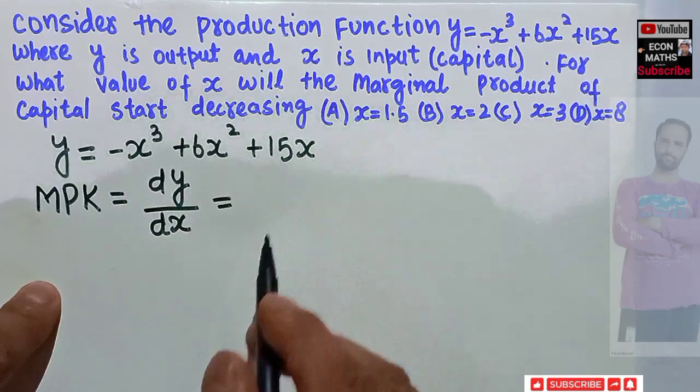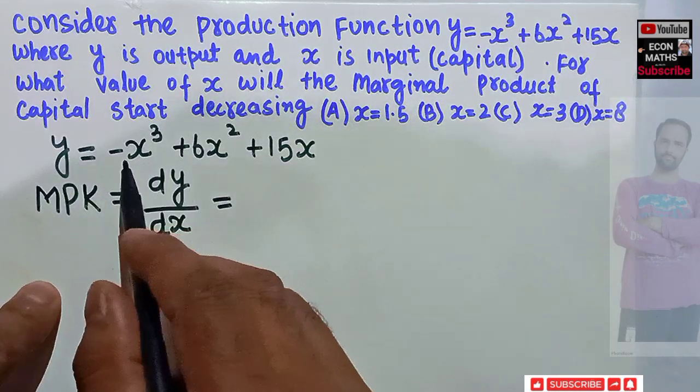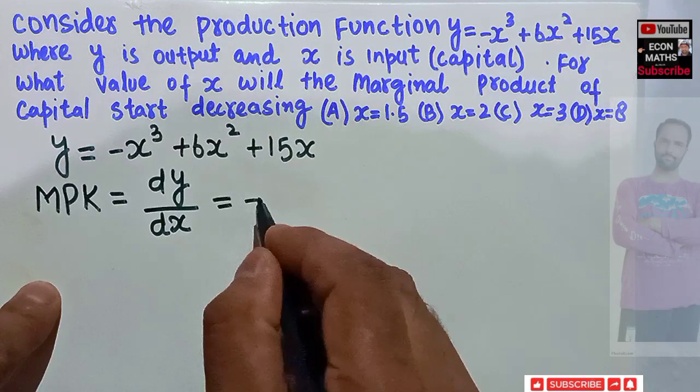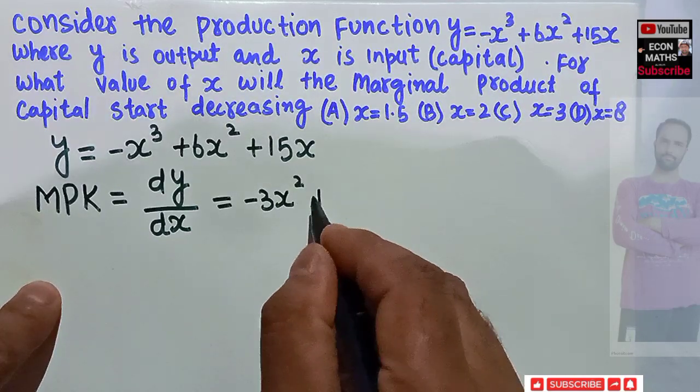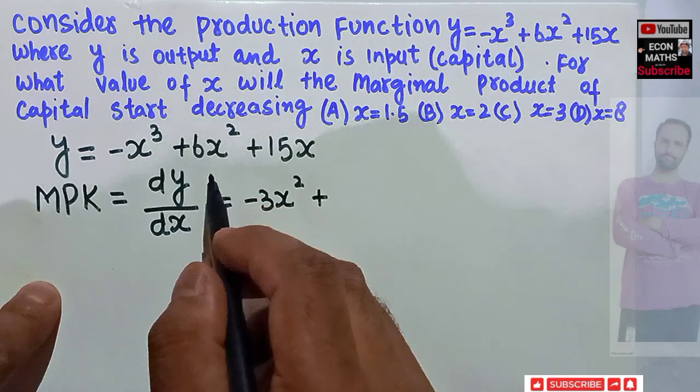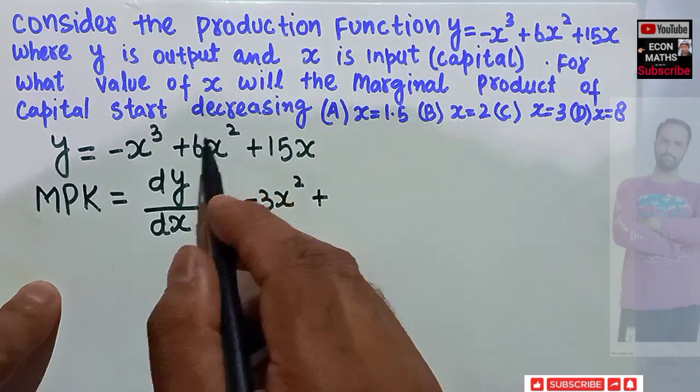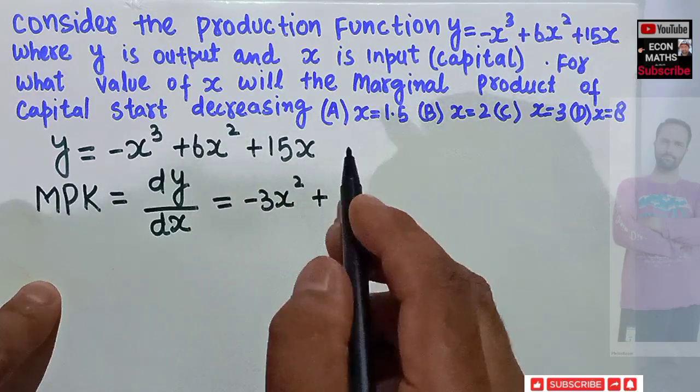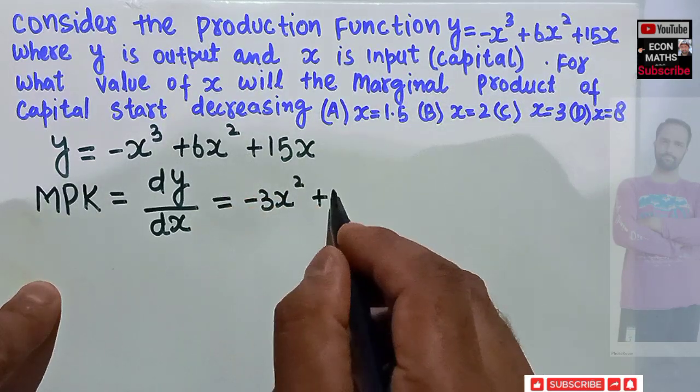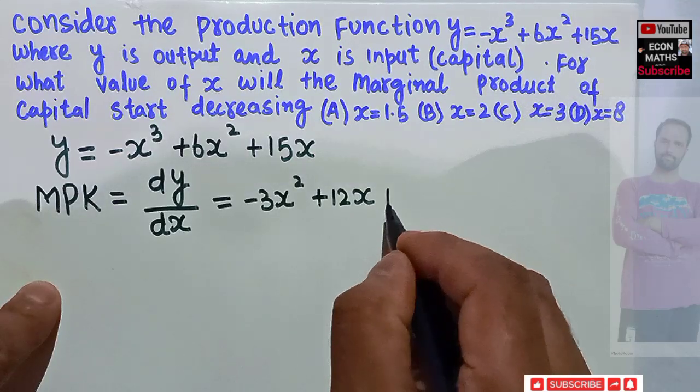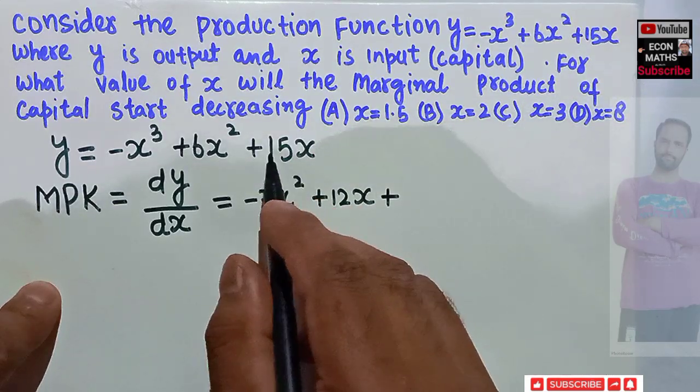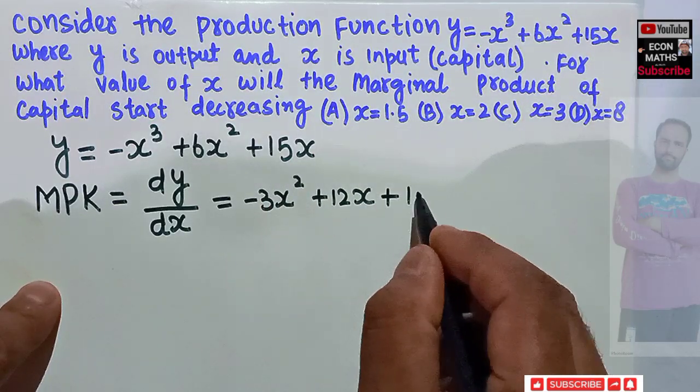So taking the derivative of this function with respect to x: derivative of x³ is -3x², plus derivative of 6x² is 12x (the exponent becomes coefficient and gets multiplied with 6, so 6×2 = 12x), plus the derivative of 15x is 15.